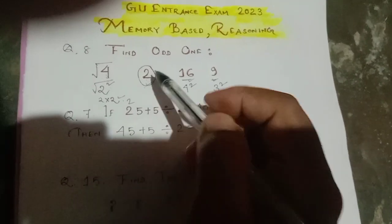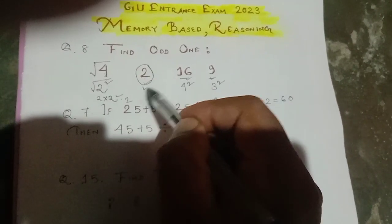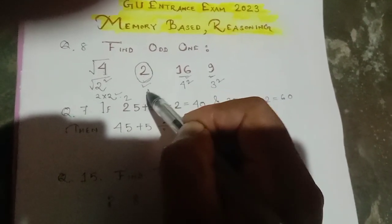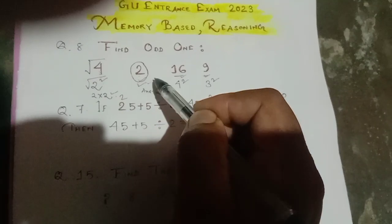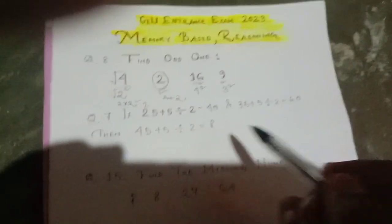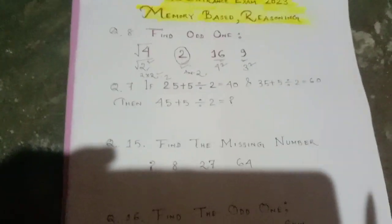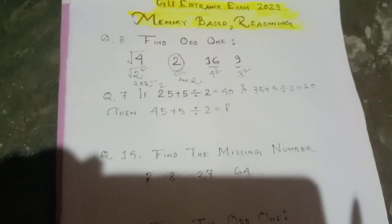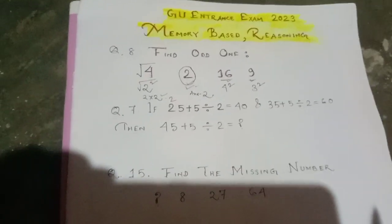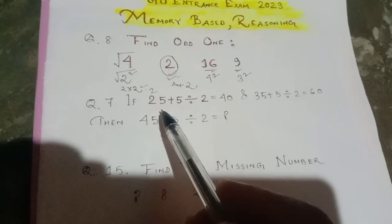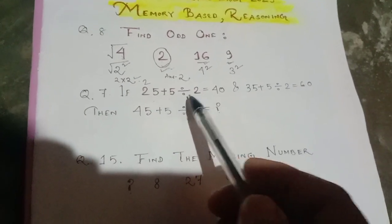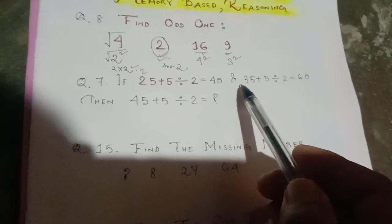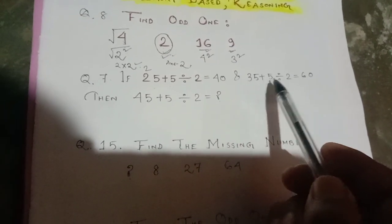So we have to find which one is the odd one out. The answer is 2, because 2 is not a perfect square. Now the next question: if 25 plus 5 divided by 2 equals 40, and 35 plus 5 divided by 2 equals 60, then what does 45 plus 5 divided by 2 equal?